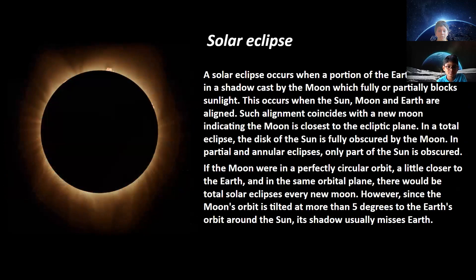Solar eclipse. A solar eclipse occurs when a portion of the Earth is engulfed in a shadow cast by the moon which fully or partially blocks sunlight. This occurs when the sun, moon, and Earth are aligned. Such alignment coincides with a new moon, indicating the moon is closest to the ecliptic plane.